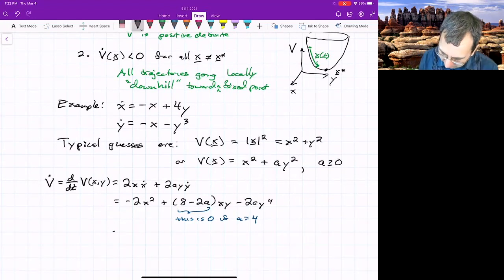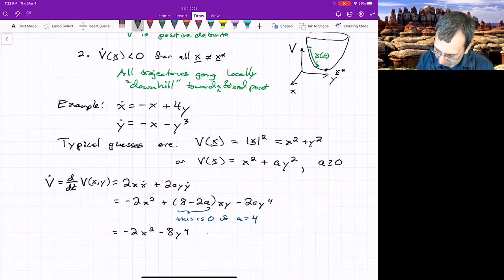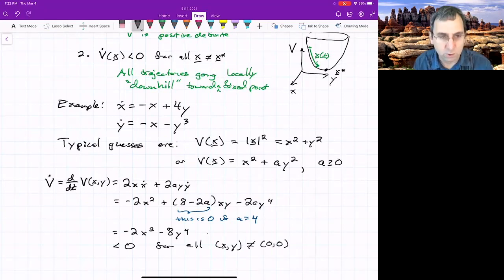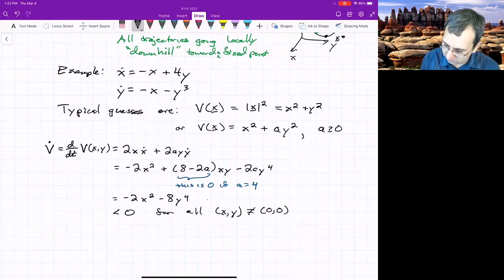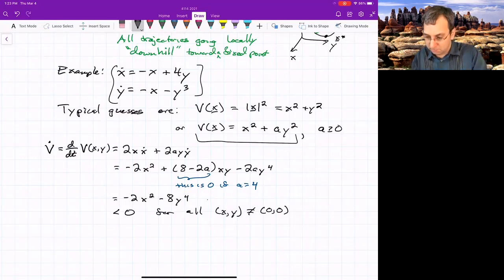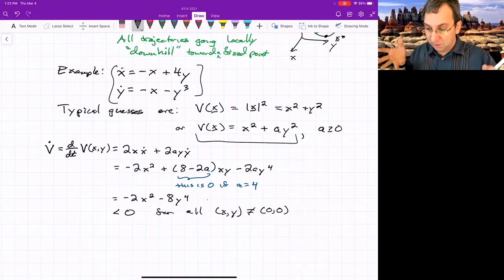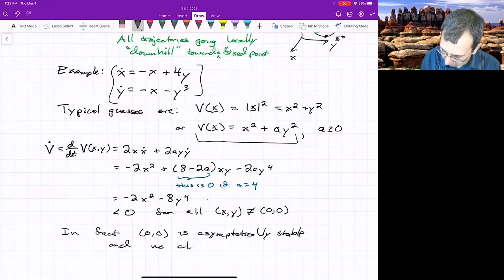So if we do that, then we get negative 2x squared minus 8y to the 4th. This is always going to be negative except at the fixed point at 0. So this is always less than 0 for all x and y that are not the origin. It's pretty clear the origin is a fixed point here. So 1 and 2 are satisfied. We found this for a equals 4. Therefore, for this system, there are no closed orbits. In fact, all the trajectories just approach the origin, because one of the uses of the Lyapunov function is to prove that the fixed point at the bottom of your function V is asymptotically stable. So everything's heading toward it. There's no closed orbits.